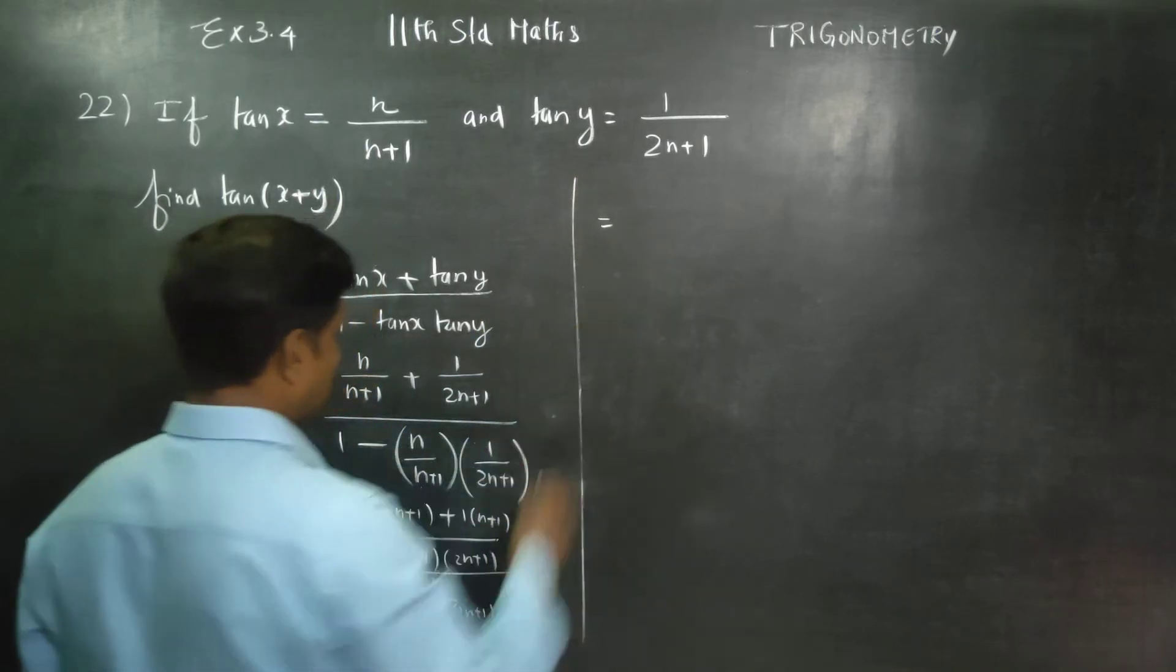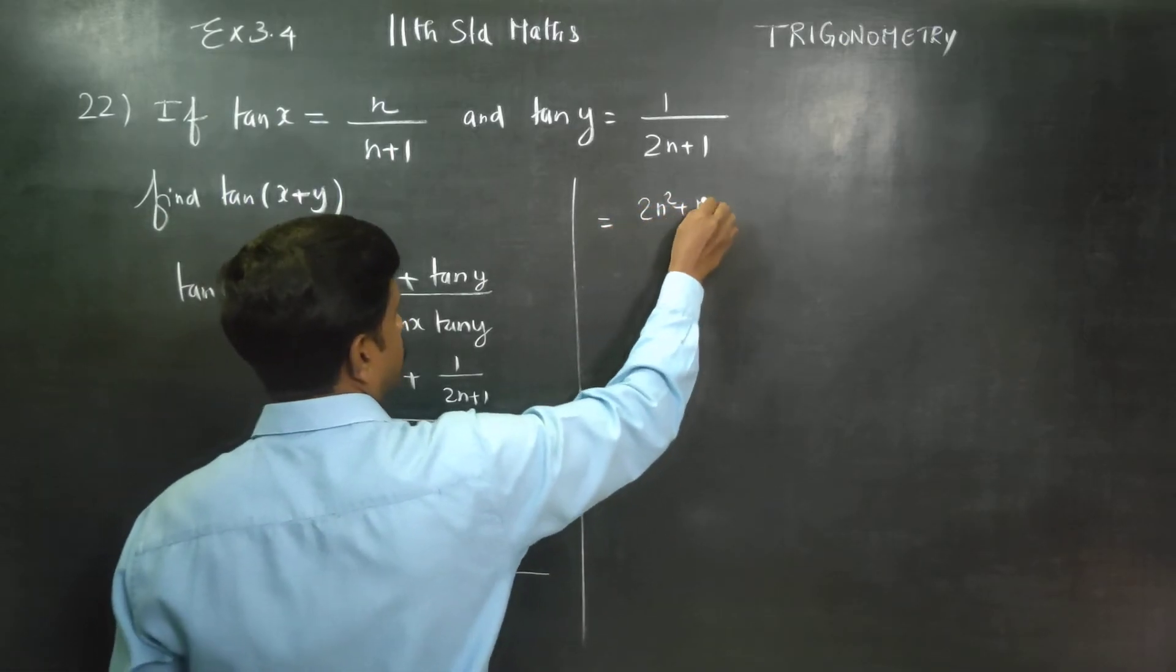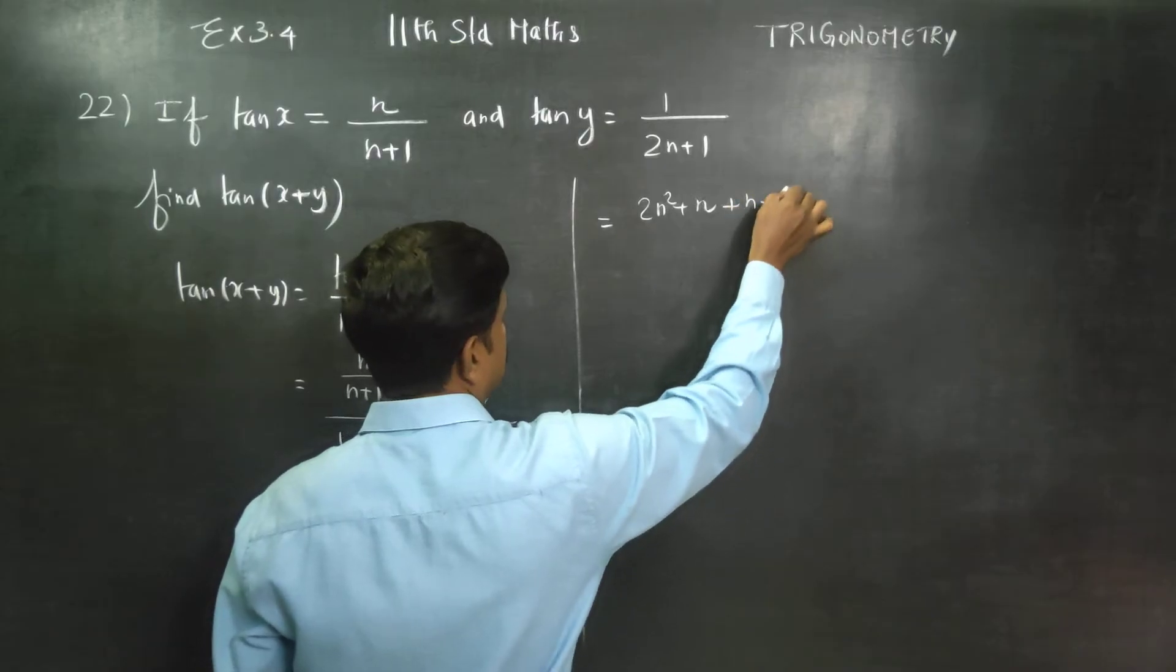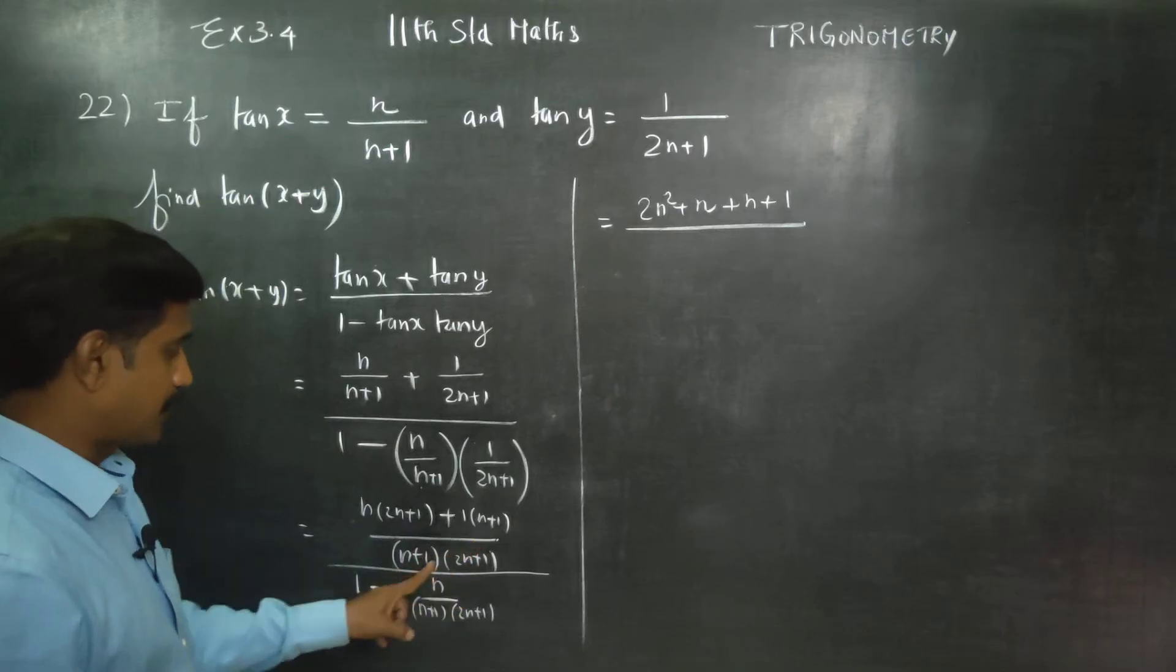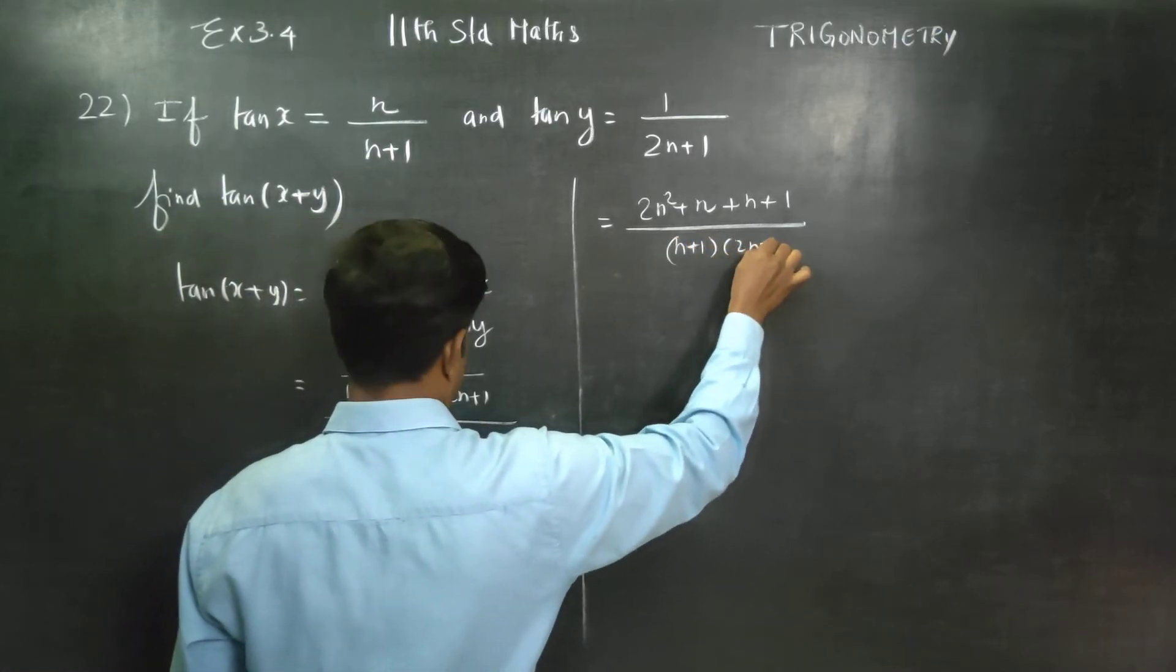Next stage. In the n, open the brackets: 2n² + n. For 1, open the brackets: plus n + 1, divided by. In the numerator, open the brackets divided by (n+1) into (2n+1).